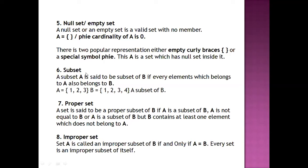Next is subset. A set A is said to be a subset of B if every element which belongs to A also belongs to B. For example, A is {1, 2, 3} and B is {1, 2, 3, 4}. All the elements of A are included in B, so A is a subset of B.